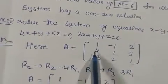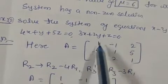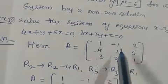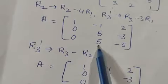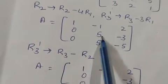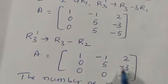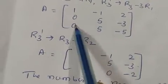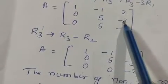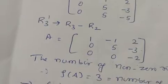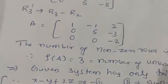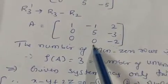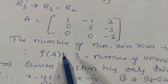To make the first-column elements zero: R2 → R2 minus 4R1 (so 4 minus 4 = 0), and R3 → R3 minus 3R1. Then R3 → R3 minus R2 to get the third row as [0, 0, minus 2]. It is not possible to make this last element zero, so there are 3 non-zero rows. Therefore, the rank of this matrix is 3.